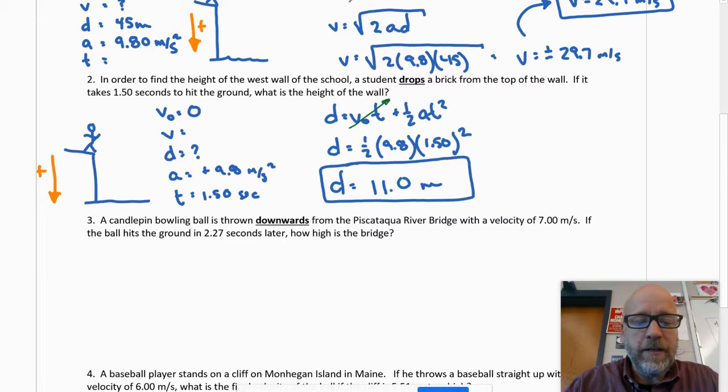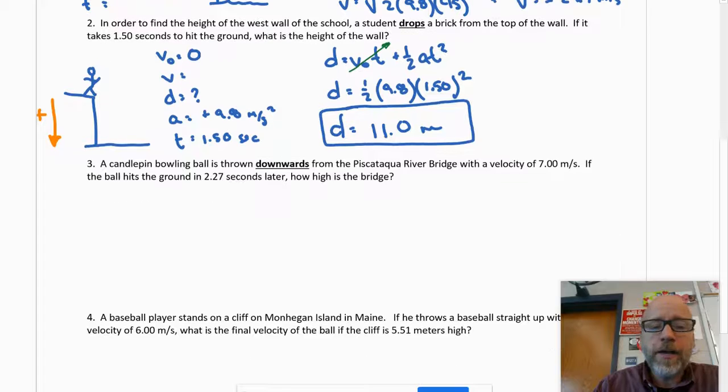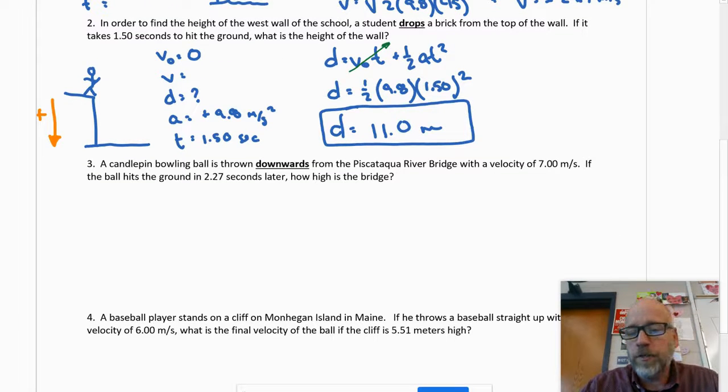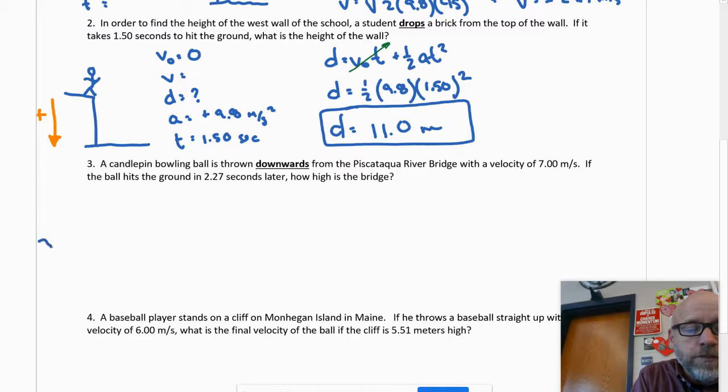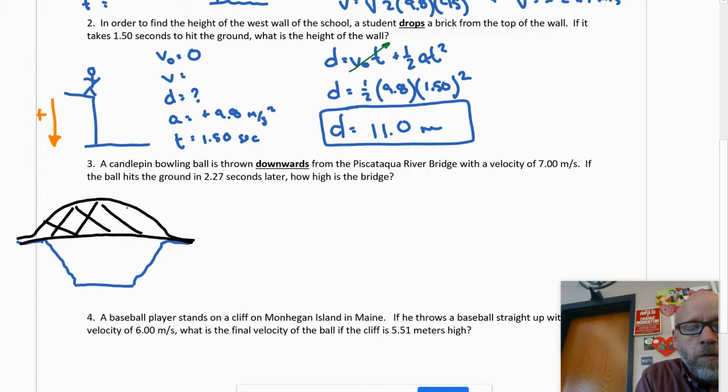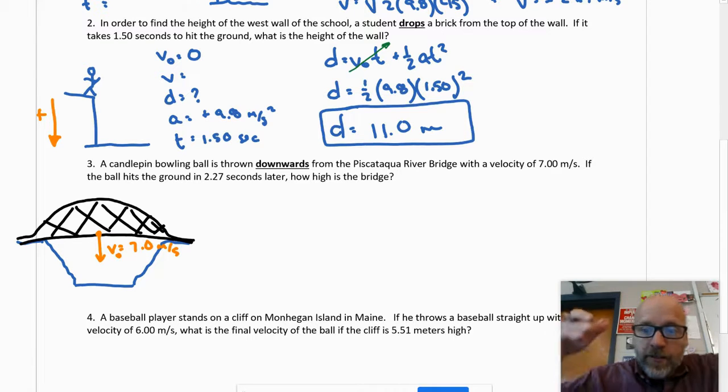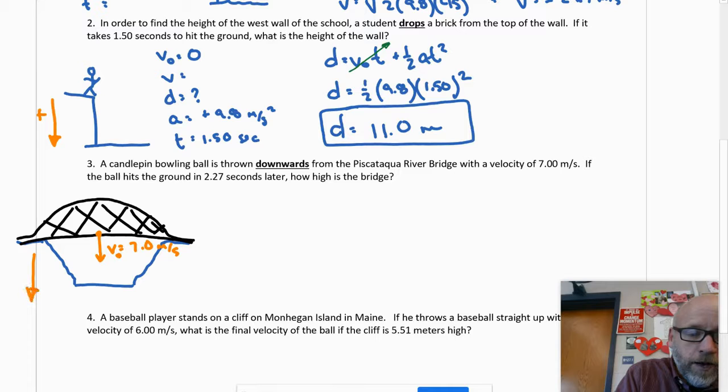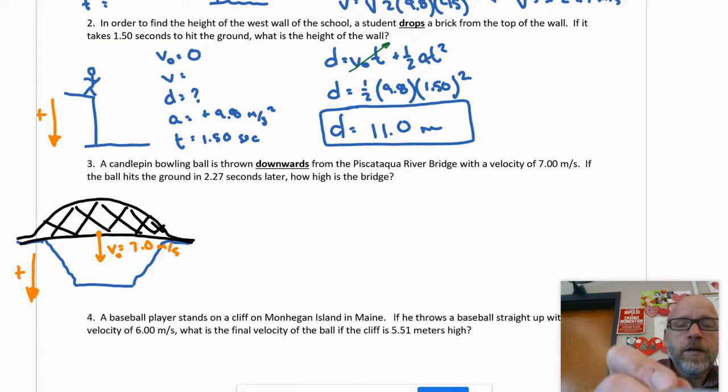Now you'll notice that I keep my answers to three sig figs. That's what the AP does, we're not going to fight about it every time. Trust me, you'll appreciate it later. Number three: a candle pin bowling ball is thrown downwards from the Piscataqua river bridge with a velocity of seven meters per second. If the ball hits the ground 2.27 seconds later, how high is the bridge? All right, so first thing I got to do just like always is draw a picture. So I'm going to draw a bridge and a person standing on it.